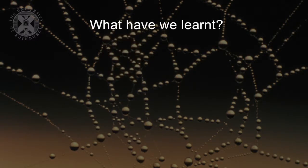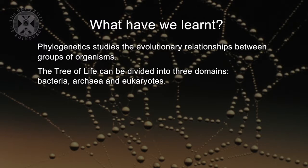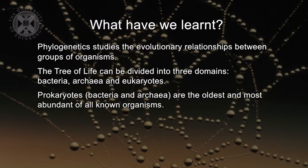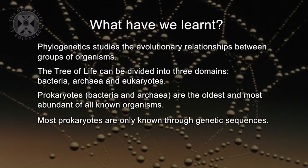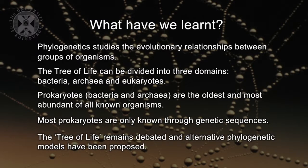So what have we learned? Phylogenetics studies the evolutionary relationship between groups of organisms. The tree of life can be divided into three domains: bacteria, archaea, and the eukaryotes, including us. Prokaryotes, which broadly include bacteria and archaea, are the oldest and most abundant of all organisms, and most prokaryotes are known only through their genetic sequences. The tree of life remains debated, and alternative phylogenetic models have been proposed. Understanding what the earliest common ancestors to life on Earth were, how the phylogenetic tree developed, and the relationship between organisms remains a key task of astrobiologists.